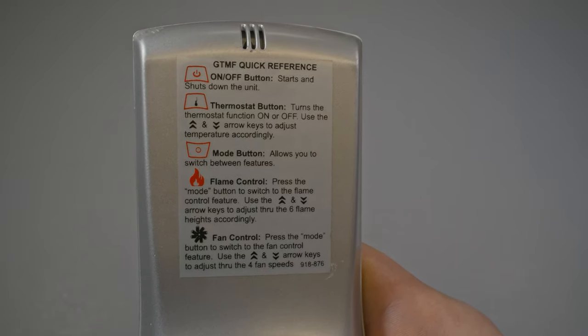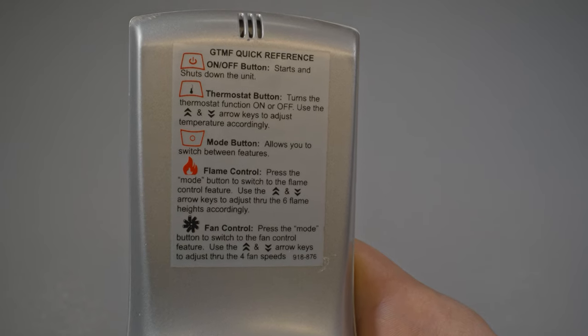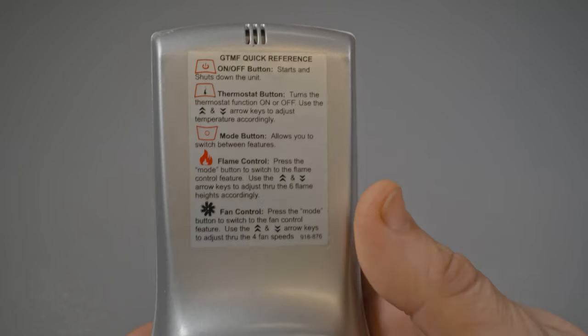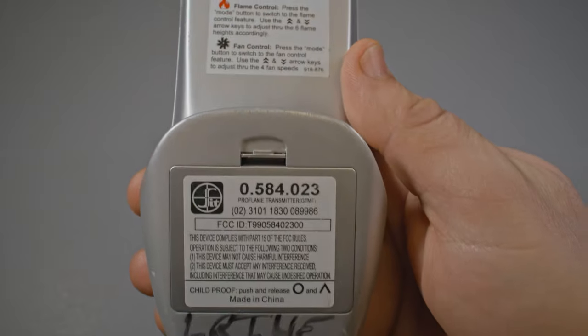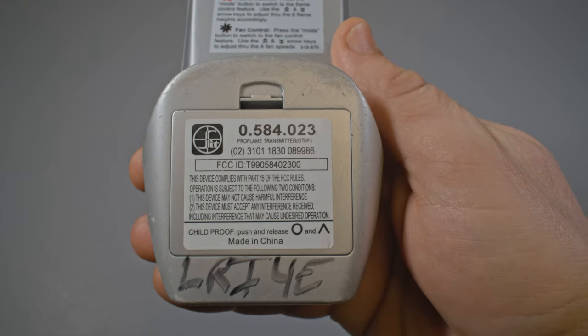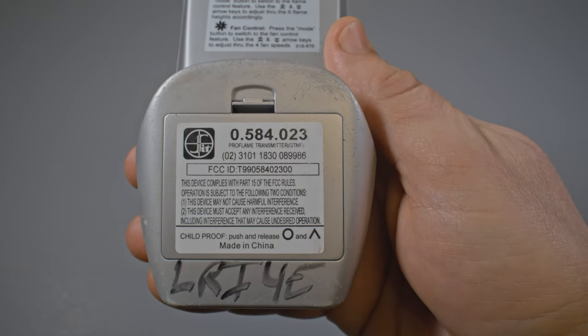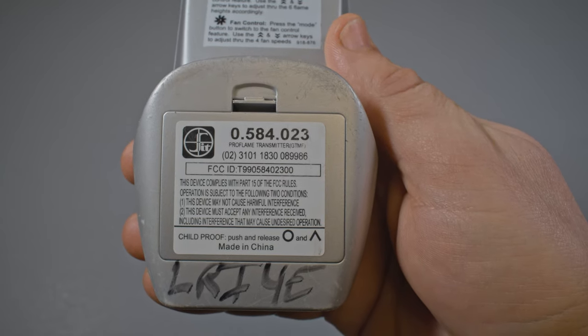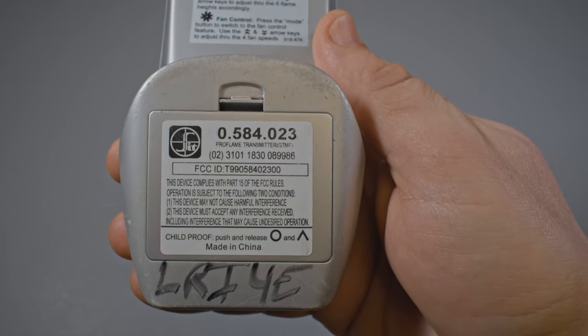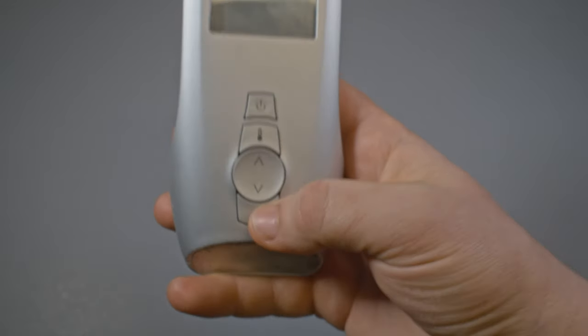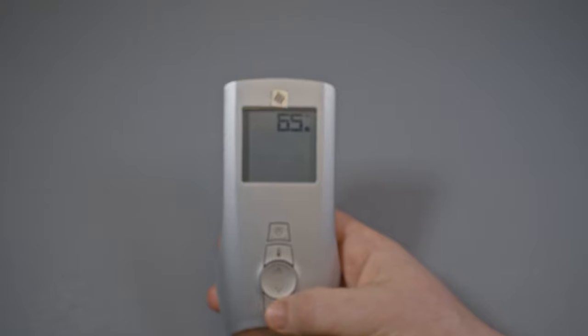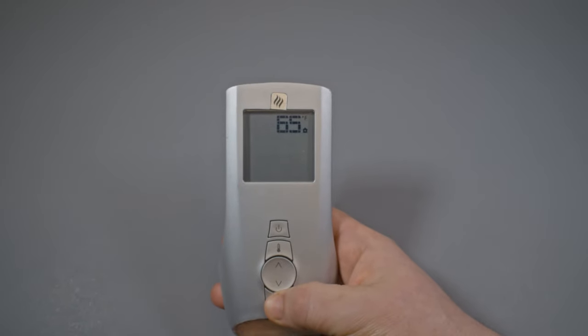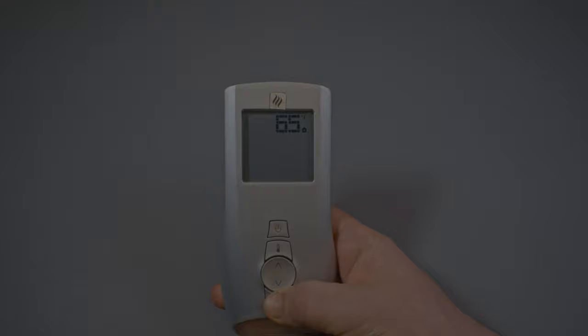Additionally, if you look on the back of the battery cover here, it actually has a child proof mode so you can put child proof on it just so that your little ones aren't turning your gas fireplace on and off while you're away or not looking. So once again, that's pretty much it with this remote. It's very straightforward. Thank you for watching and stay tuned to see more.